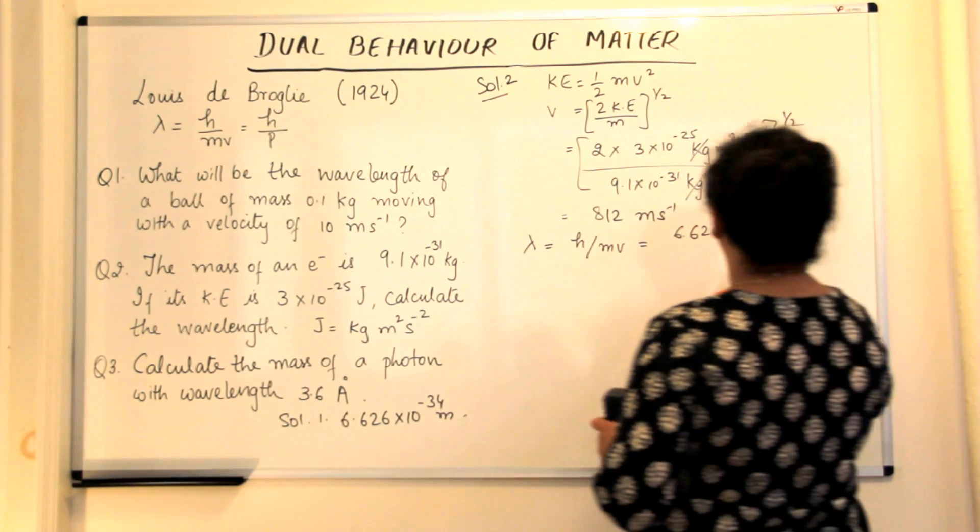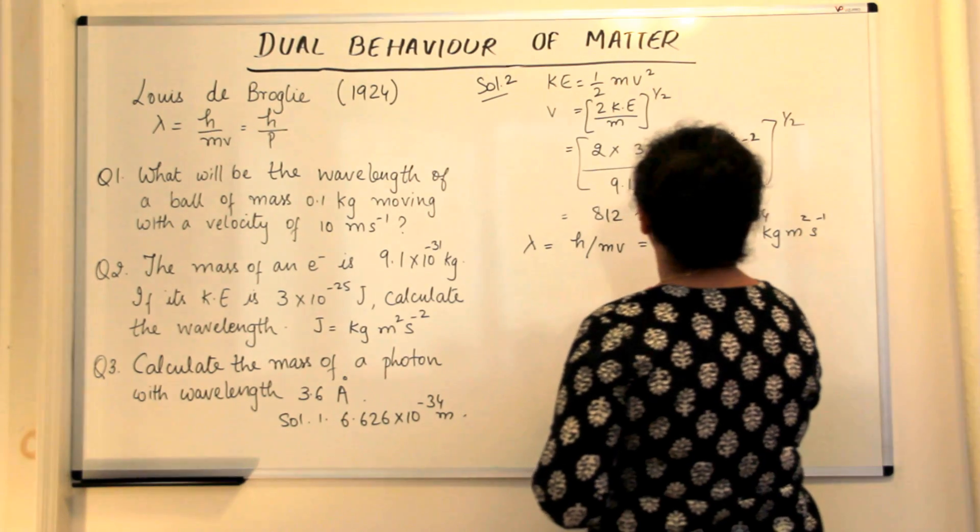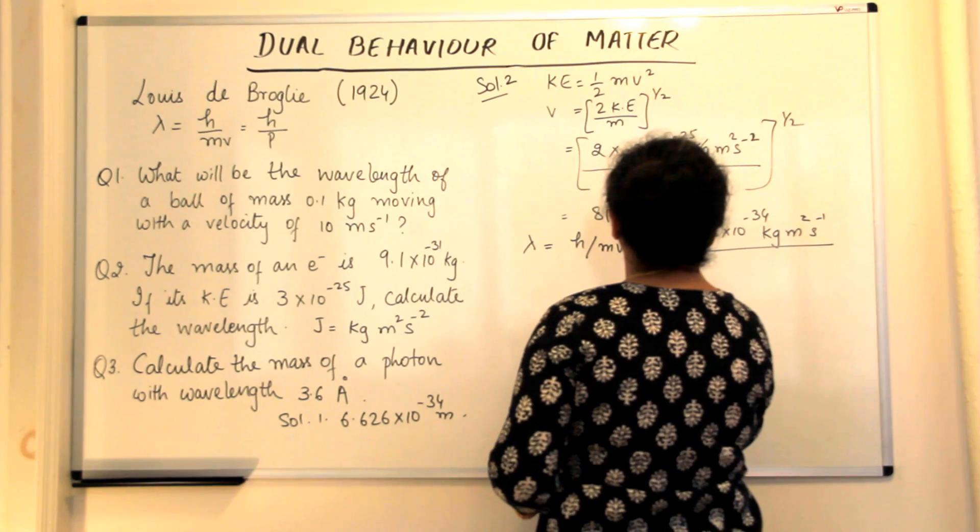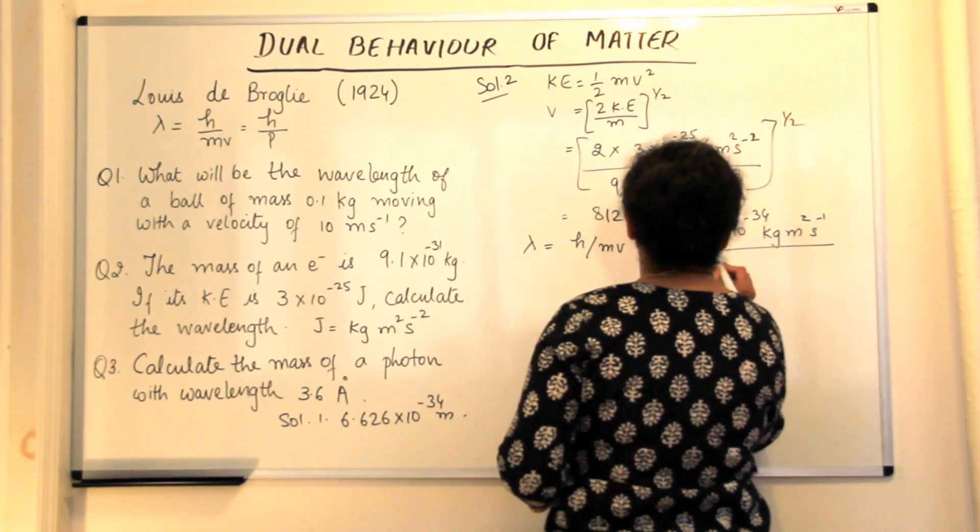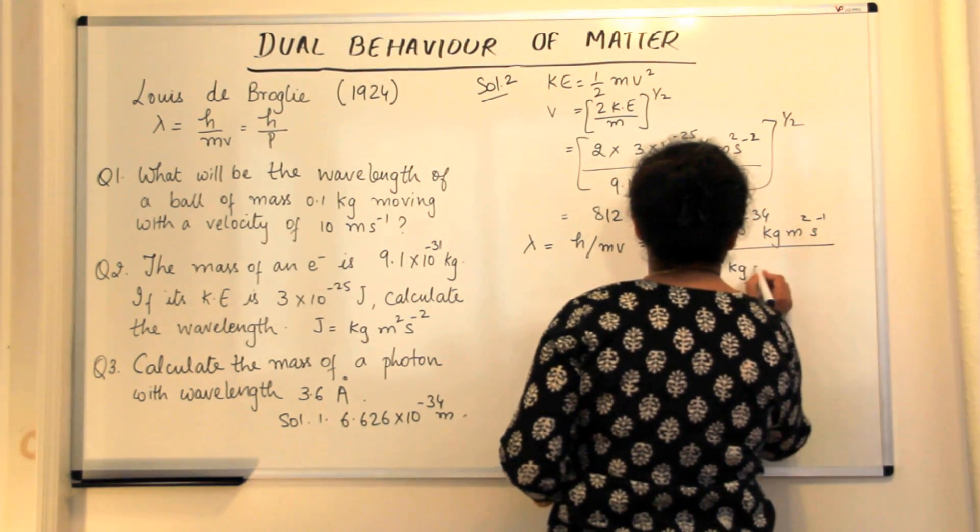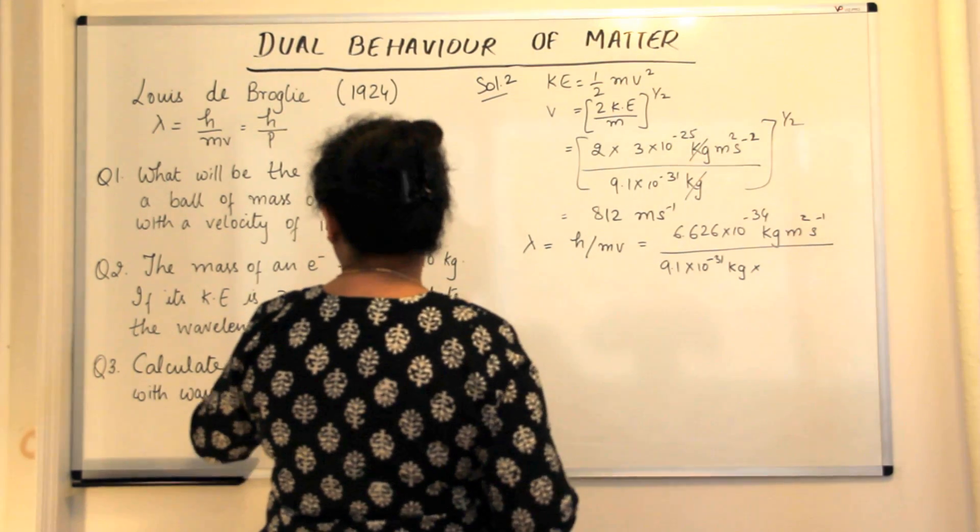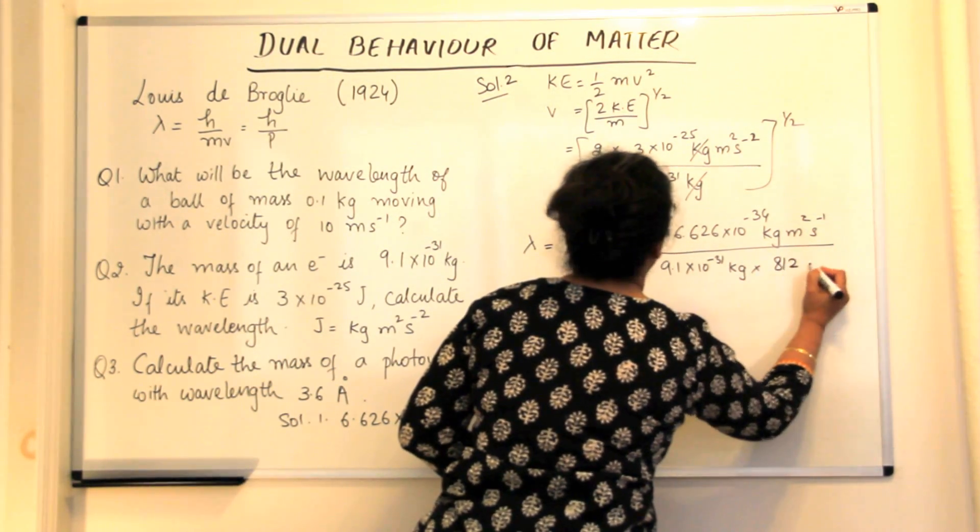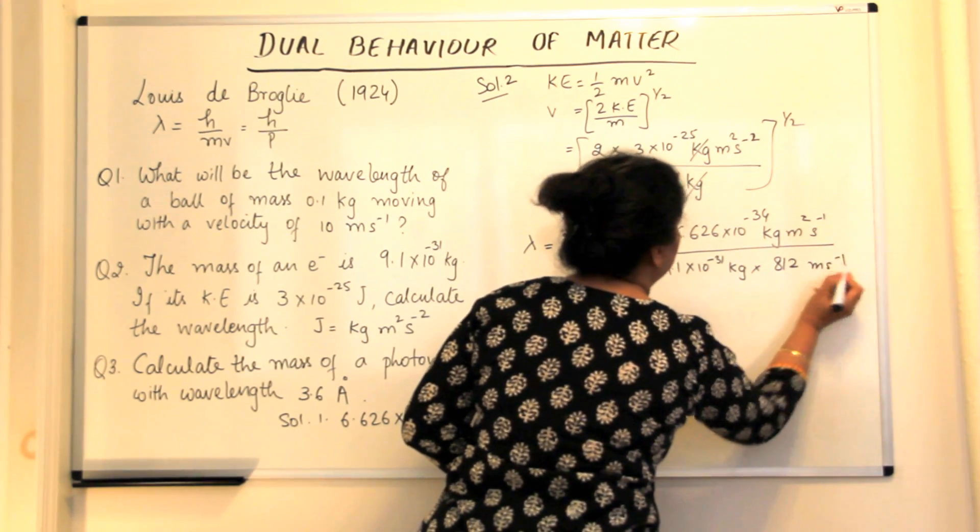Minus 1 divided by mass of an electron is 9.1 into 10 to the power minus 31 kgs into the velocity which we have calculated is 812 meters per second.